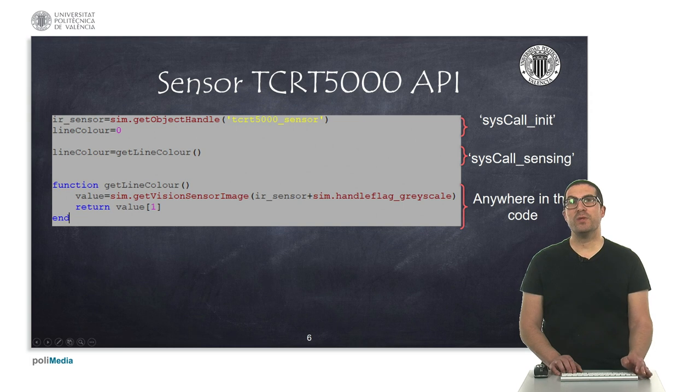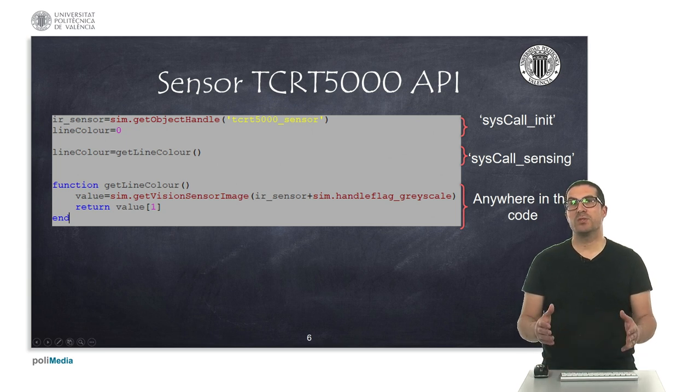So, the function returns a list with all the information of the image. In this case, because it's a single pixel and it's a grayscale image, the information of interest will be obtained directly on the first element of the list, the first pixel.